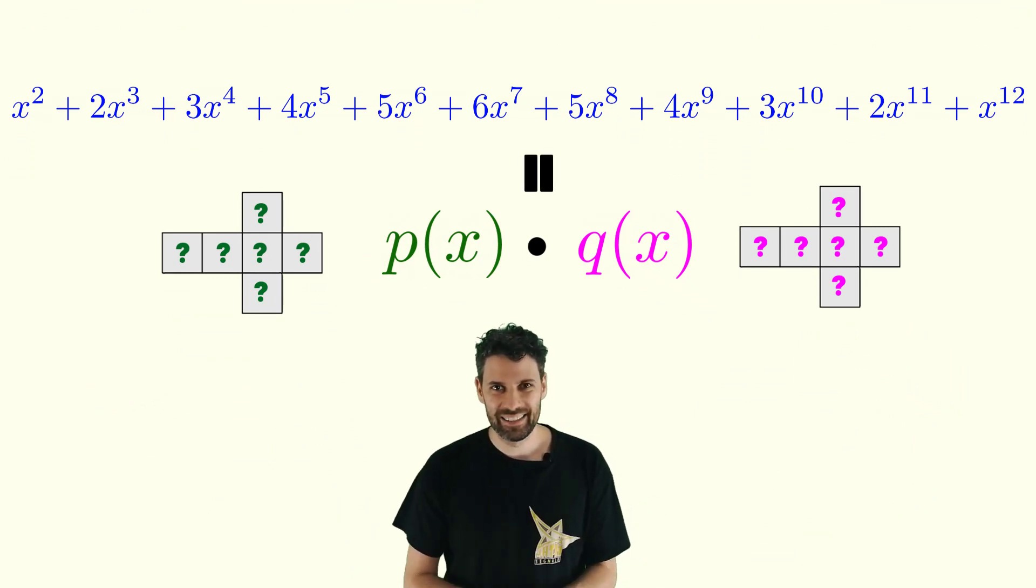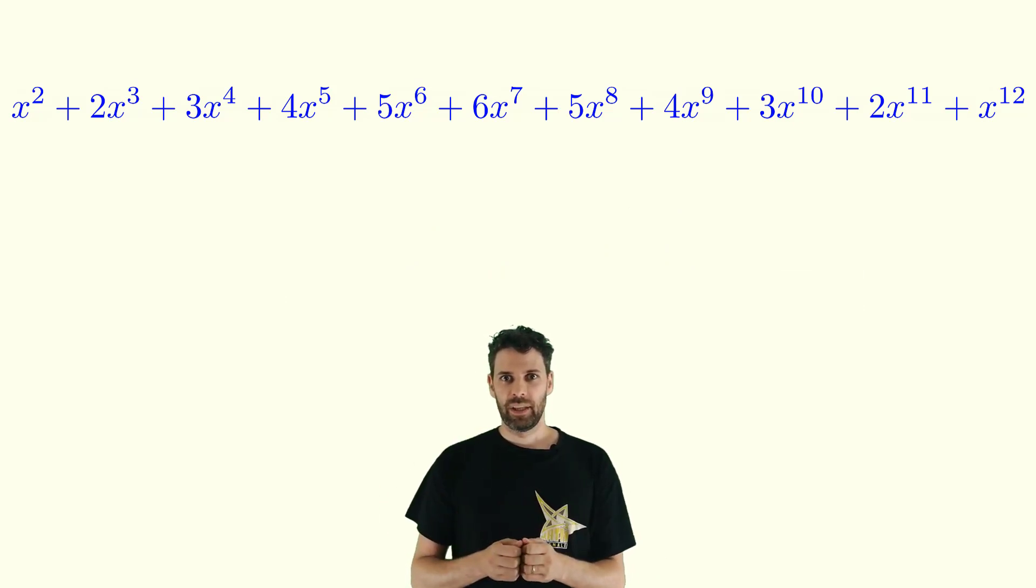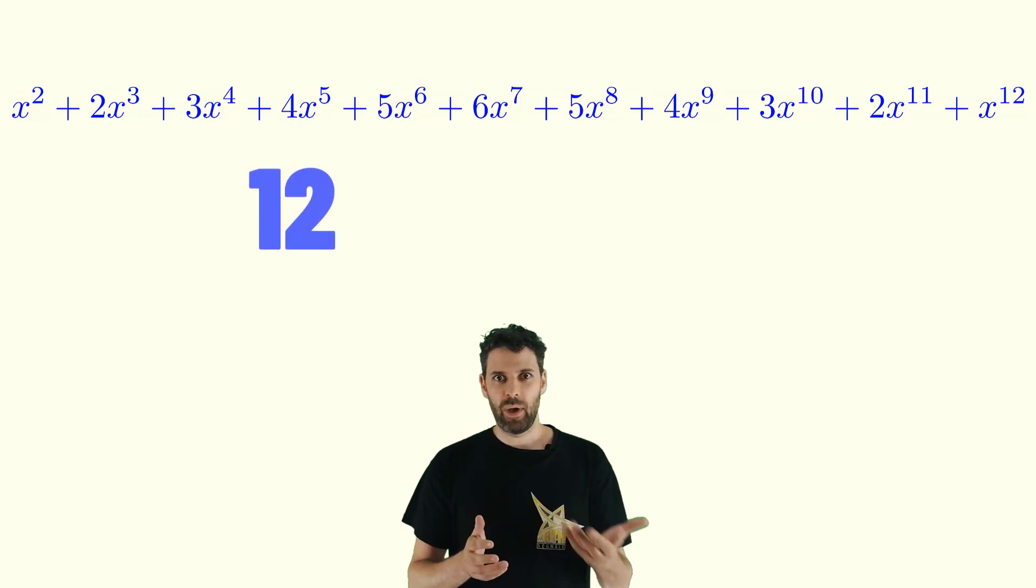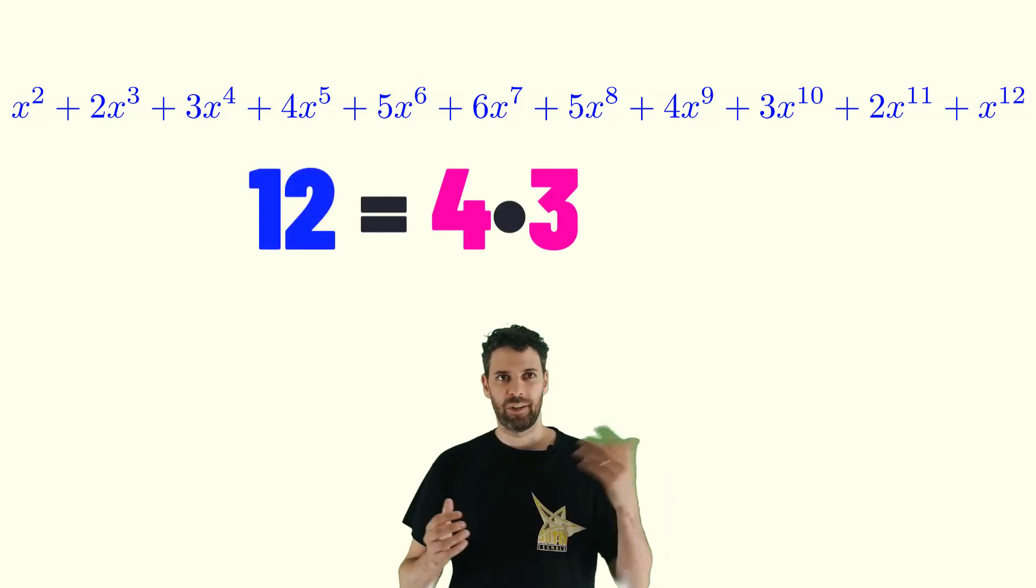But how can we do that? Well, when you have a polynomial you can try to factor it as you factor numbers. For instance 12 is 4 times 3 or 6 times 2.